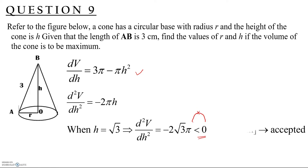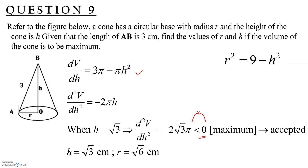Since H = √3 gives a maximum volume, we find R by substituting back: R² = 9 − H² = 9 − 3 = 6, so R = √6. Therefore, the final answer is H = √3 and R = √6.